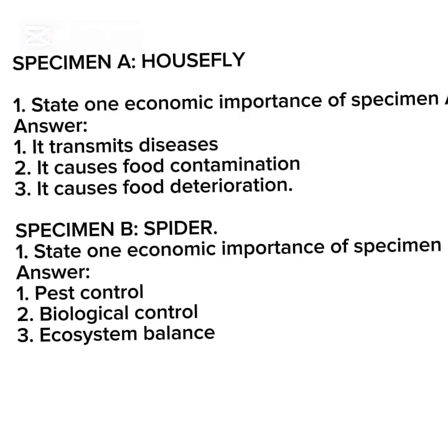Specimen A is a house fly. You may be asked to state one economic importance of Specimen A. Answer: number one, it transmits diseases; it causes food contamination; it causes food deterioration.